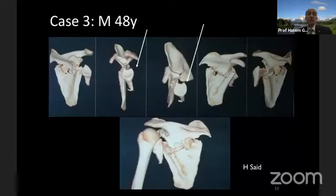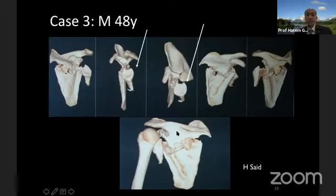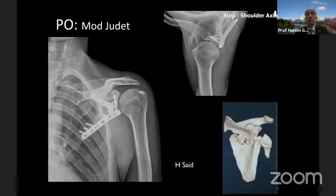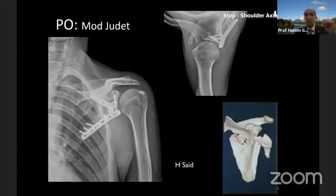Another more severe case: the glenoid is completely floating, completely separated from the body and upper scapula. This is the indication for surgery. Using a posterior approach, we repaired the lateral border with a 3.5mm locking plate. I prefer locking plates because the scapula is quite thin — sometimes you only have a 4mm screw to hold, so locking screws are the preferred choice. Passive range of motion starts immediately after the operation, with active-assisted at three to four weeks.